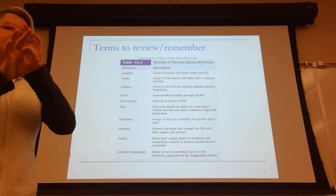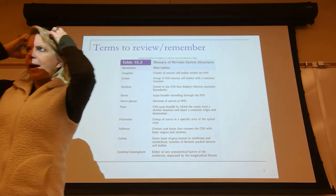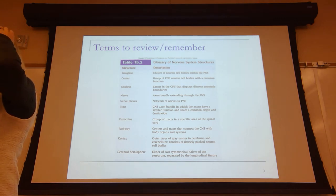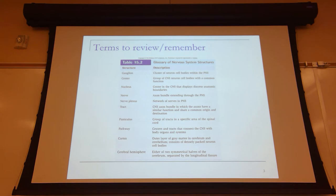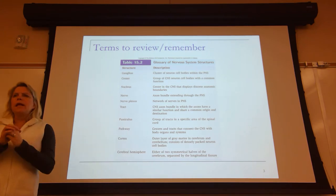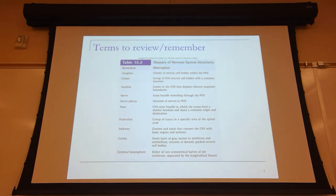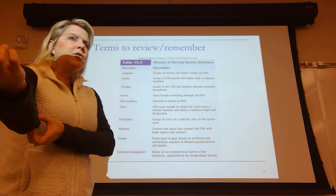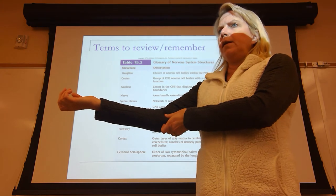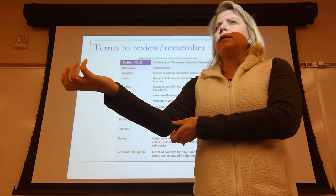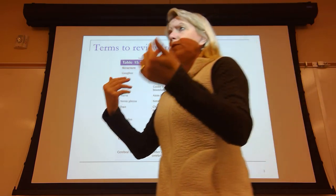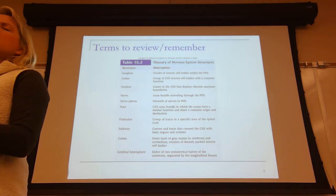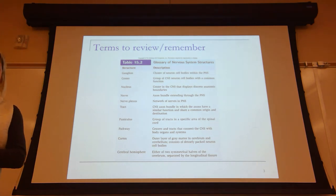Nuclei are clusters of neuronal cell bodies — somas — that have a common function, and I will tell you about centres and nuclei in your brain that are performing certain functions for your body. A nerve is a collection of axons outside of the central nervous system. Last week I asked you to pinch your ulnar nerve above the medial epicondyle, and if you got it right your pinky finger and ring finger would start to tingle.